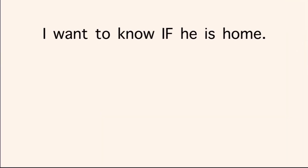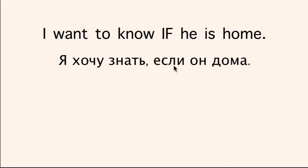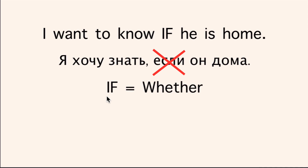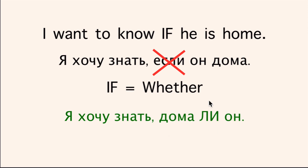Let's look at this example in English: 'I want to know if he's home.' Many people will say если here. What we need to remember is that every time 'if' equals 'whether' — if you can replace 'if' with 'whether,' as in 'I want to know whether he's home' — in Russian you want to use the particle ЛИ. The sentence will be: Я хочу знать дома ли он. ЛИ is going to be the second element in the subordinate clause.